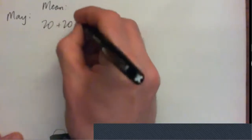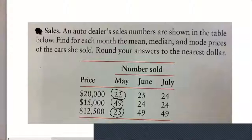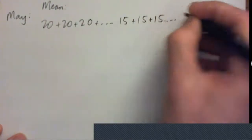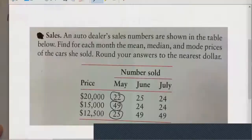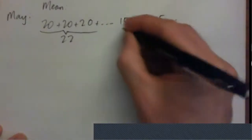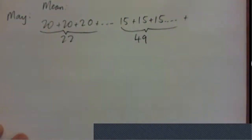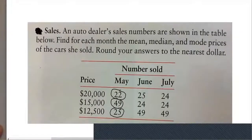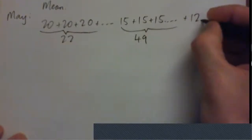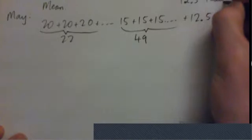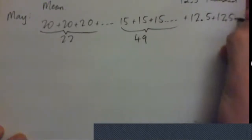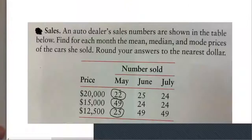So what that looks like is 20,000 + 20,000 + 20,000 and there are 22 of those, and then 15,000 + 15,000 and there are 49 of those priced cars, and then 25 cars priced at 12,500 — I'll work in thousands, so 12.5 — and there are 25 of those.